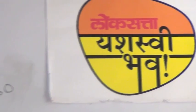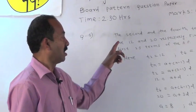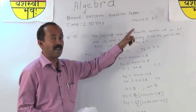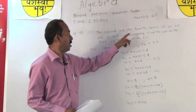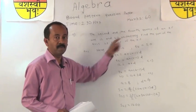Welcome to Lokshatta Yashashvibhava. We are discussing the board paper pattern of algebra question number 5. This is the example from chapter 1. The second and the fourth term of an AP are 12 and 20 respectively. Find the sum of the first 25 terms of the AP.